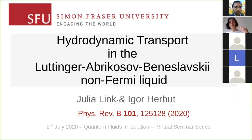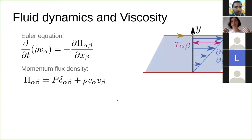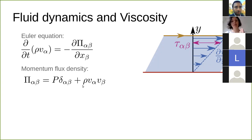Hydrodynamics describes the dynamics of fluids. An ideal fluid is normally described by the Euler equations. The Euler equations say that the time derivative of the velocity density is equal to the gradient of the momentum flux density, where the momentum flux density is defined as the pressure plus the density and the two velocity components alpha and beta. But we don't live in an ideal world — there's always dissipation and friction in your system.